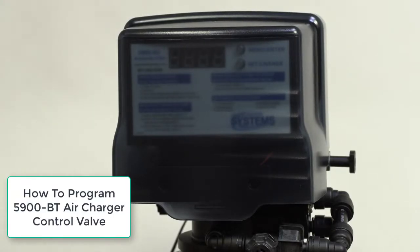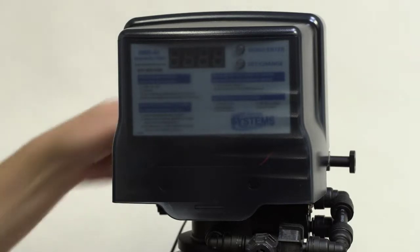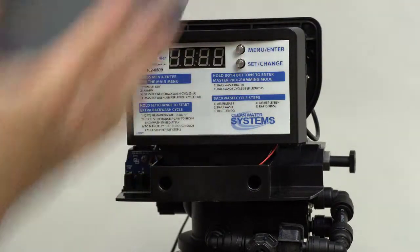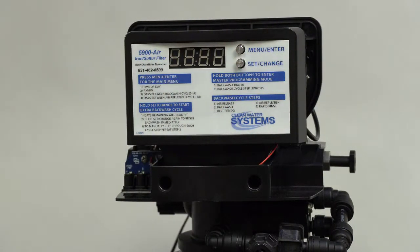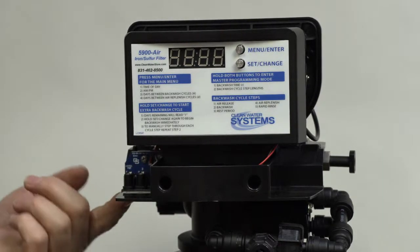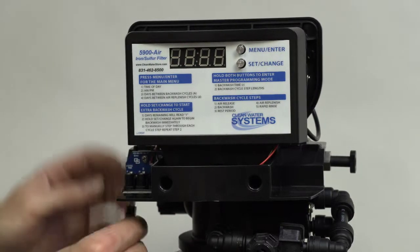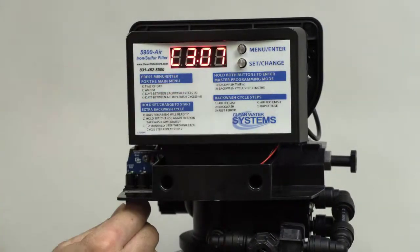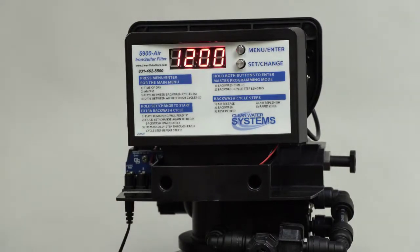Howdy folks, got another Clean Water instructional video. Today we're going to program the Bluetooth 5900, so we're going to take off the helmet cover first and get that out of the way. Plug it in - you've got three ports to plug it in: P, B, and S. You're always going to use P, which is the one furthest away from the valve. It's also the only one that the plug fits into. Turn it on, it'll say the computer revision code, then it'll start flashing between the time of day and the number of days between regeneration.